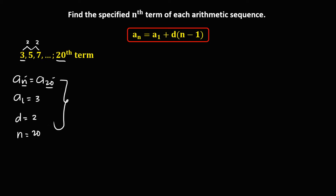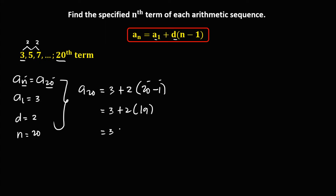To solve for the 20th term: a sub 20 equals a sub 1, that's 3, plus the common difference, that's 2, times n is 20, then minus 1. Then simplify: 3 plus 2 times 19, and 2 times 19 is 38. So therefore, a sub 20 equals 3 plus 38, which is 41.